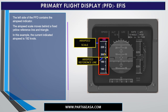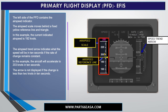The left side of the PFD contains the airspeed indicator. The airspeed scale moves behind a fixed yellow reference line and triangle. In this example, the current indicated airspeed is 192 knots. The airspeed trend arrow indicates what the speed will be in 10 seconds if the rate of change remains constant. In this example, the aircraft will accelerate to 203 knots in 10 seconds. The arrow is not displayed if the change is less than 2 knots in 10 seconds.